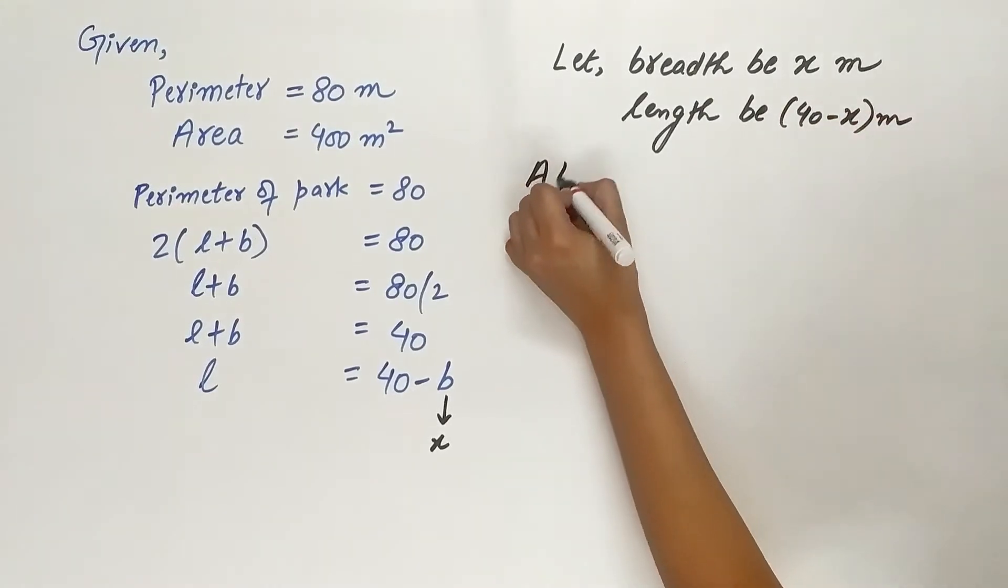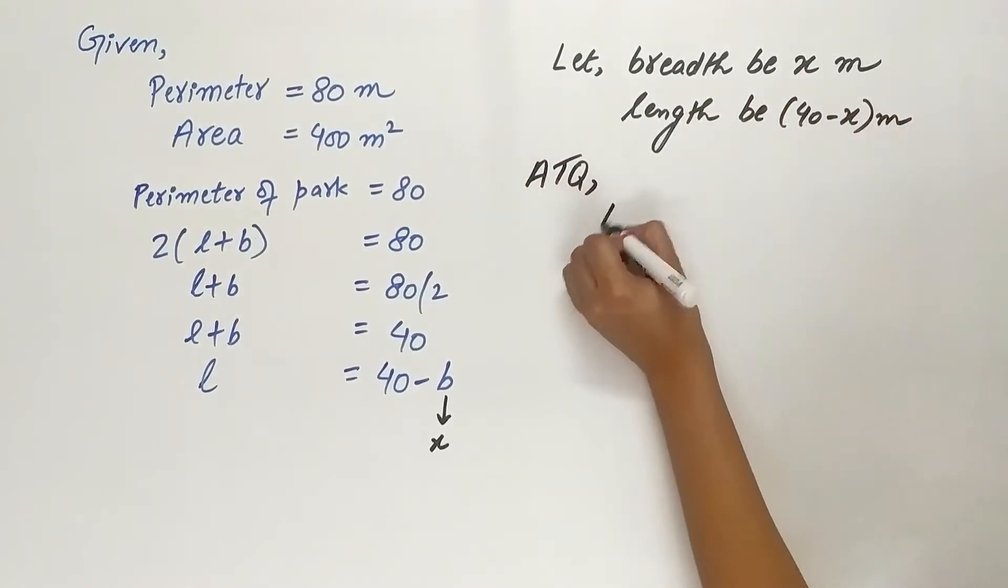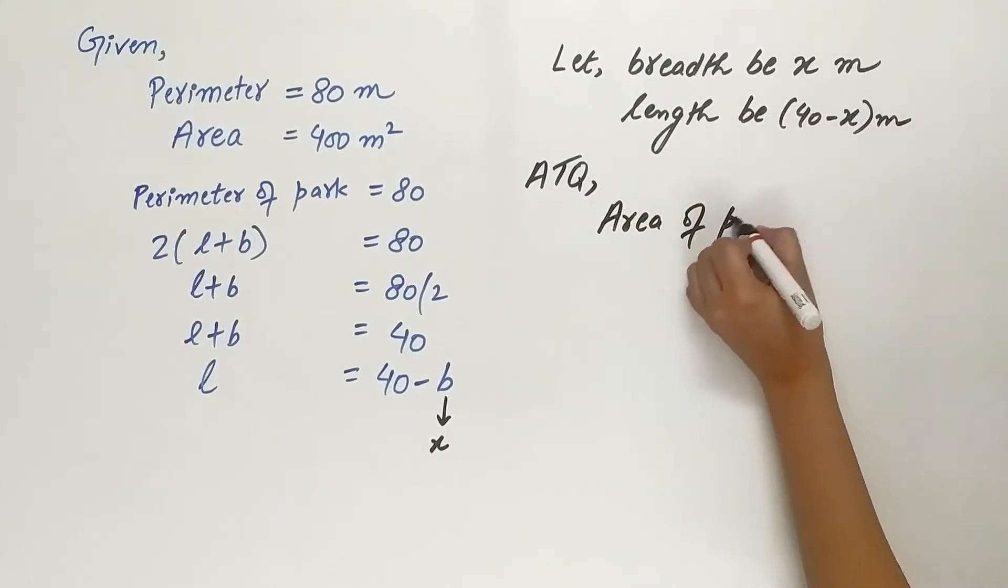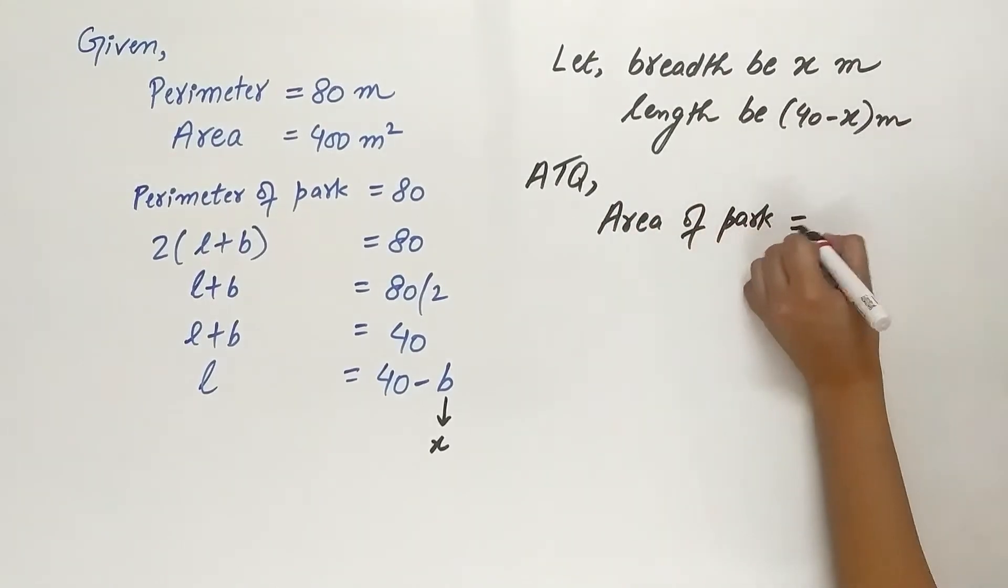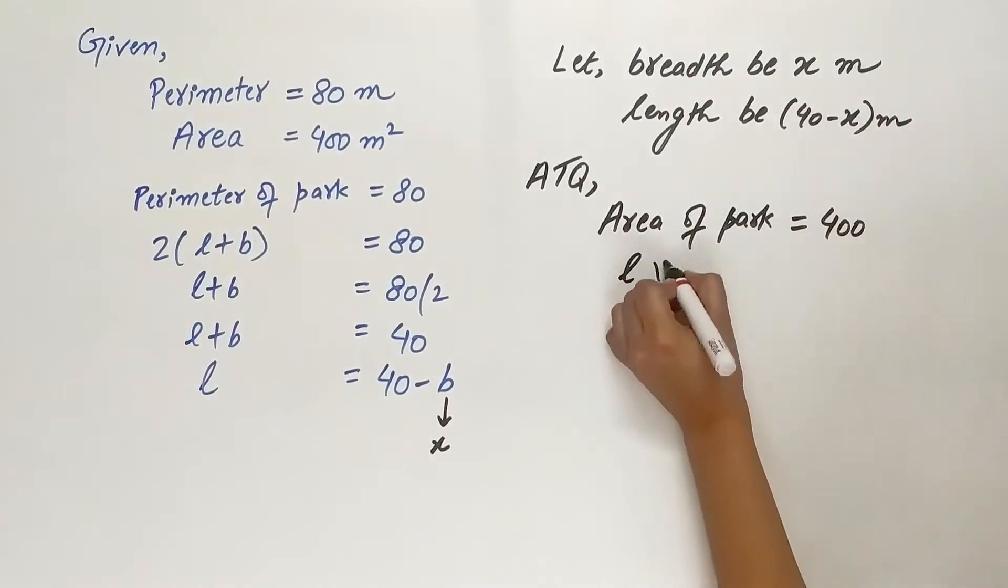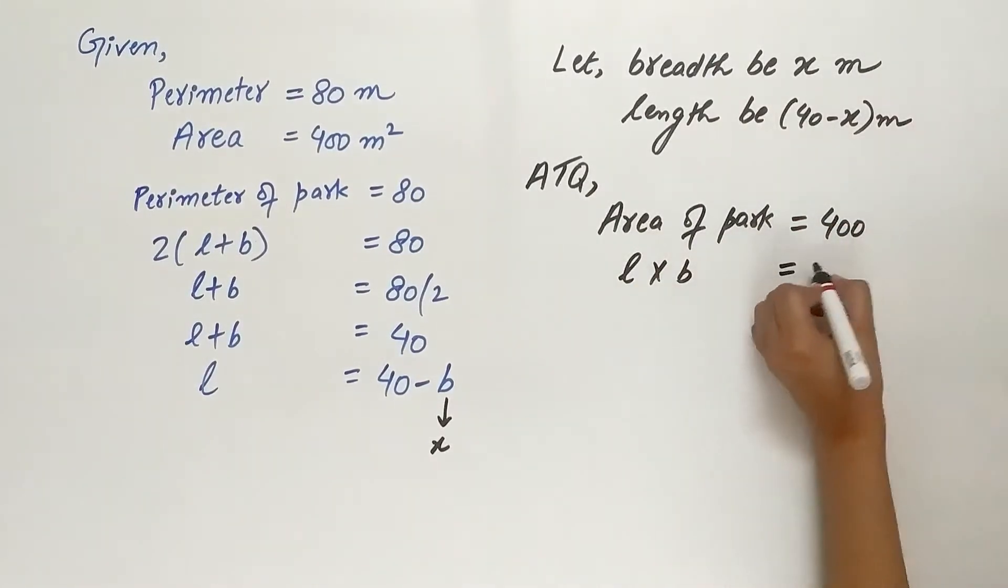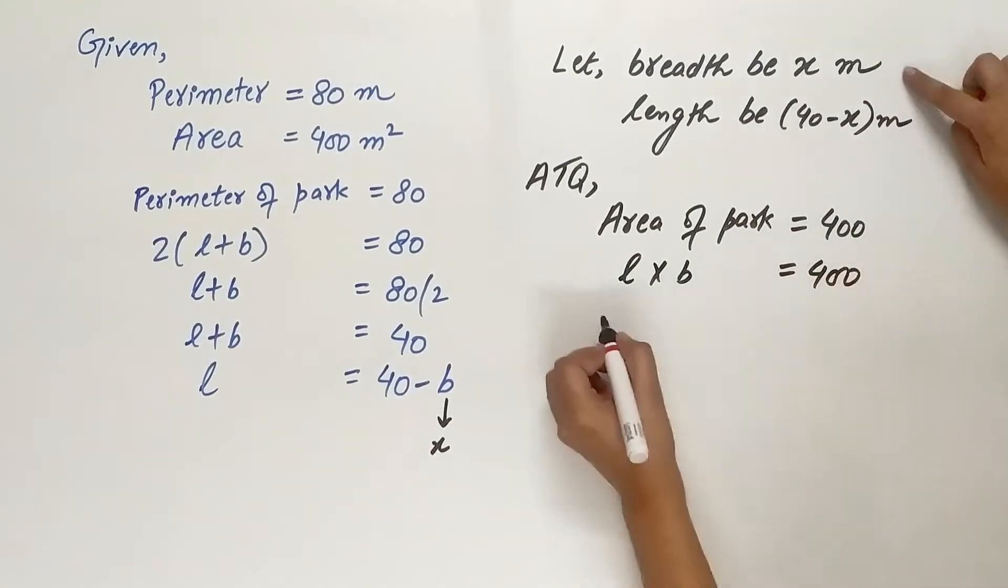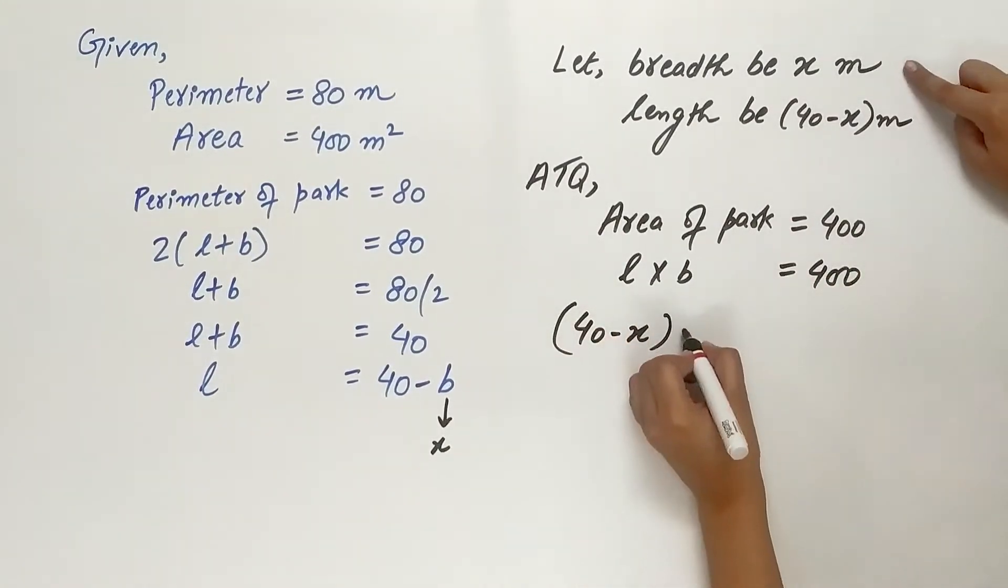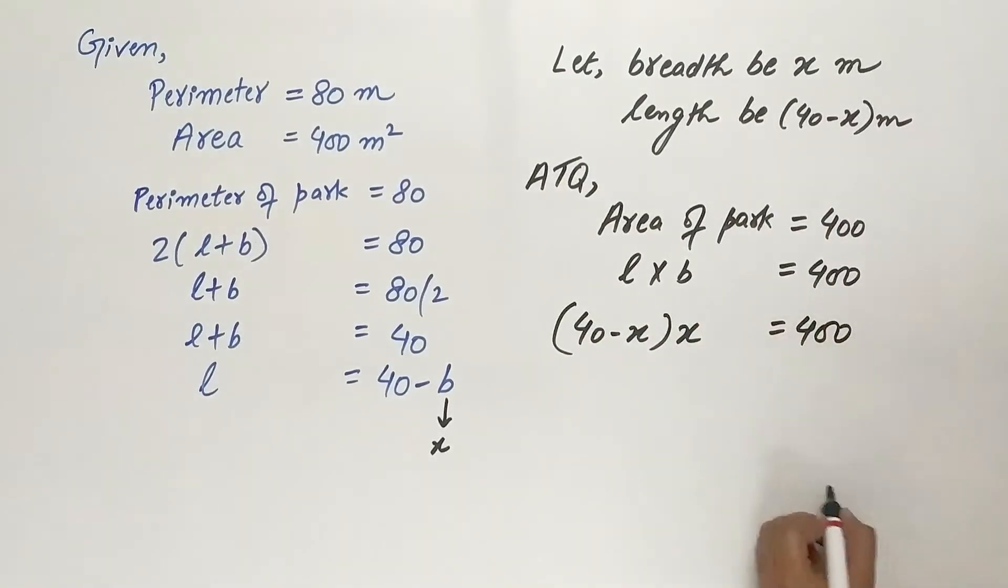Now according to question, area of park is 400 meters square. Area is length multiplied by breadth. Length is 40 minus x. Breadth is x equal to 400.